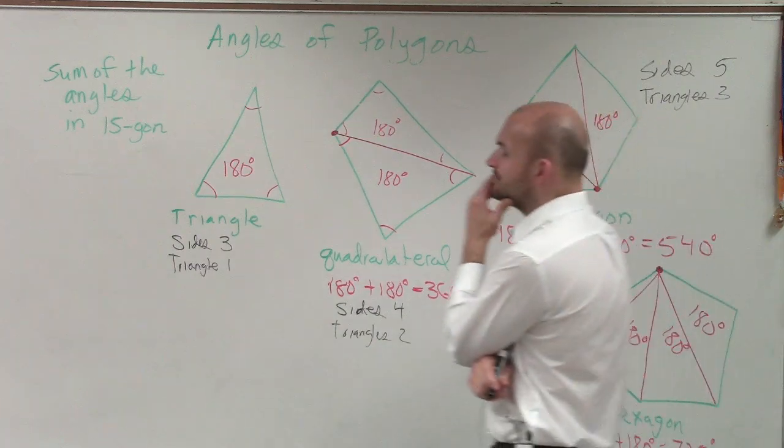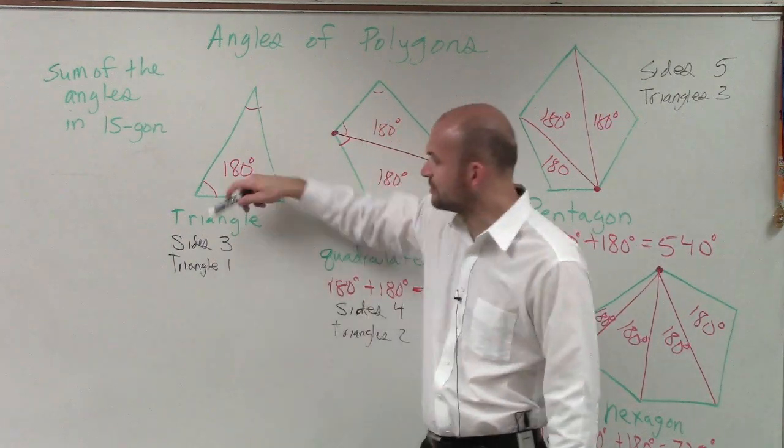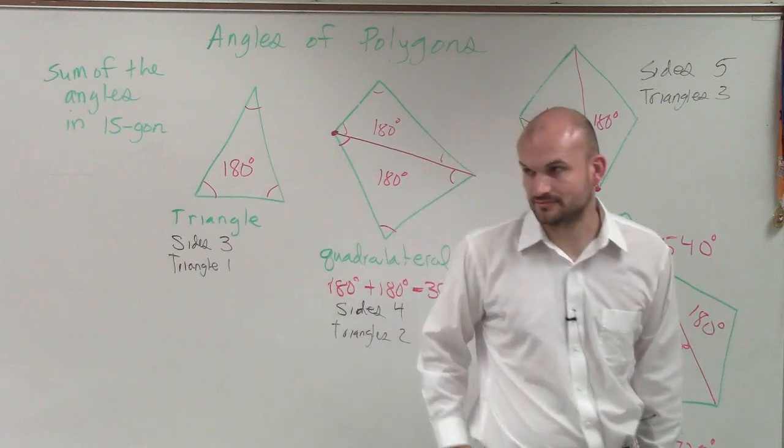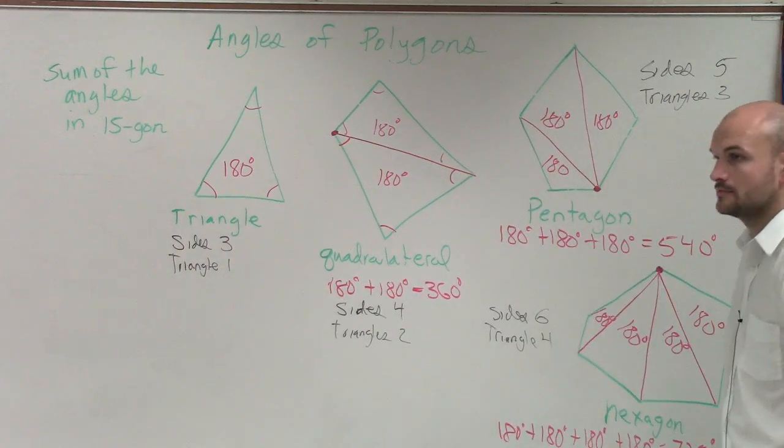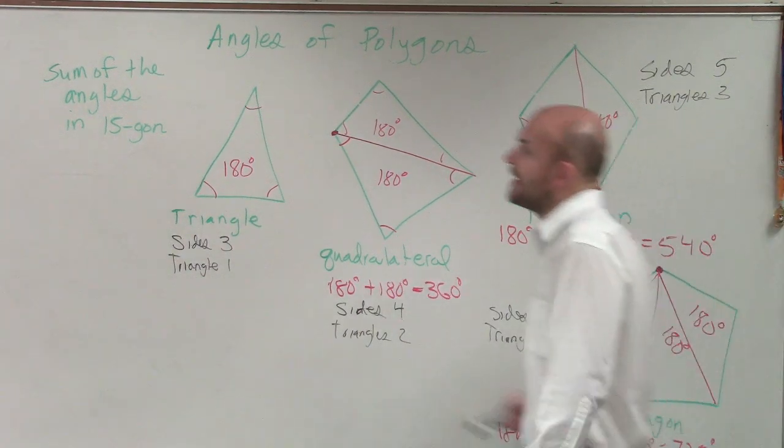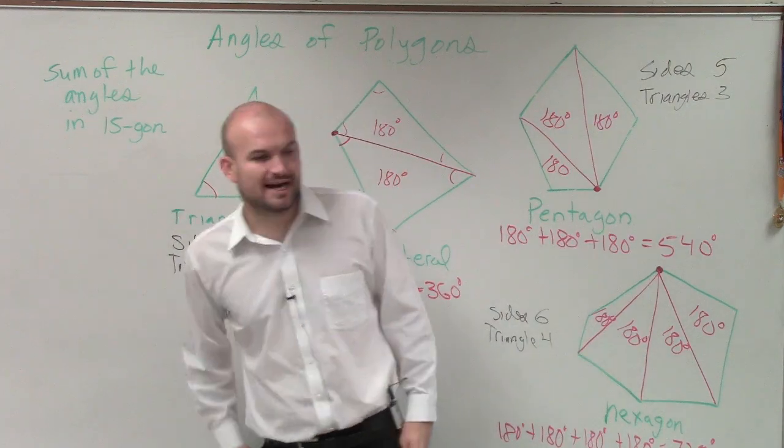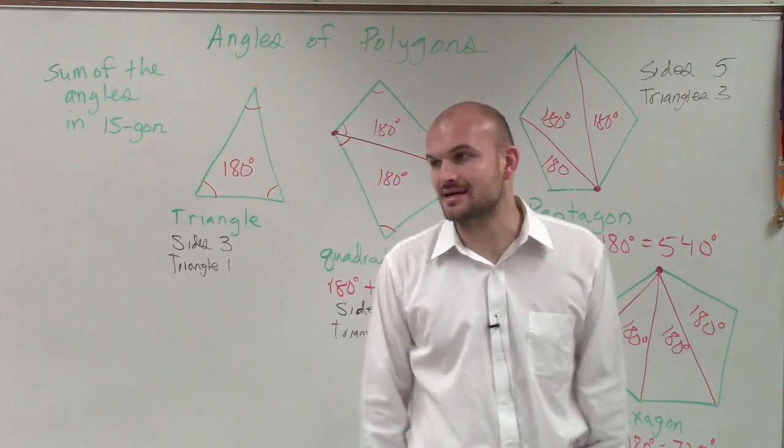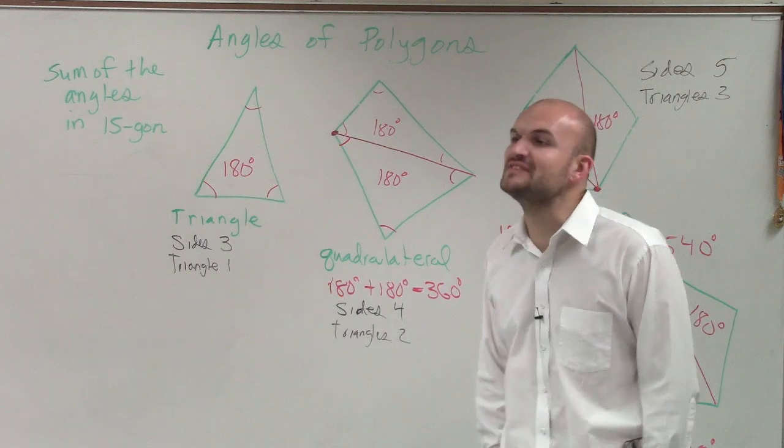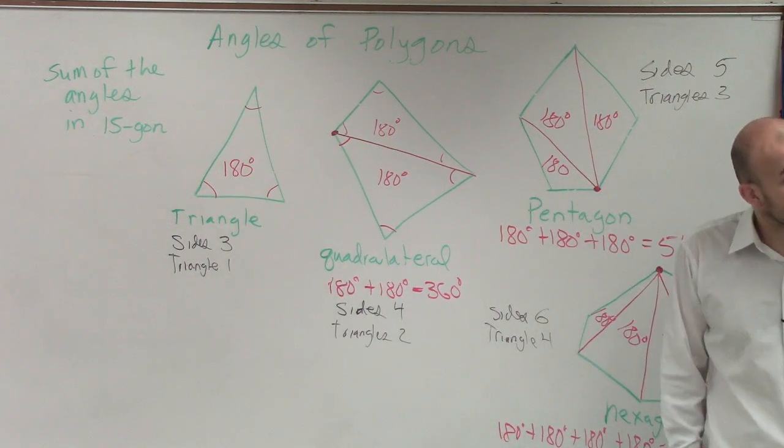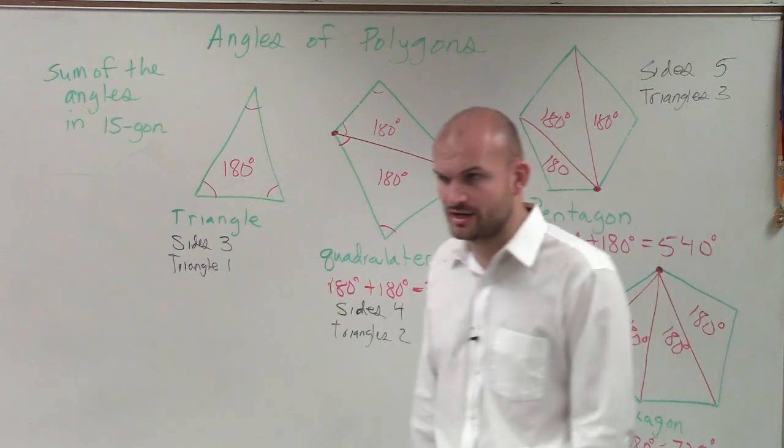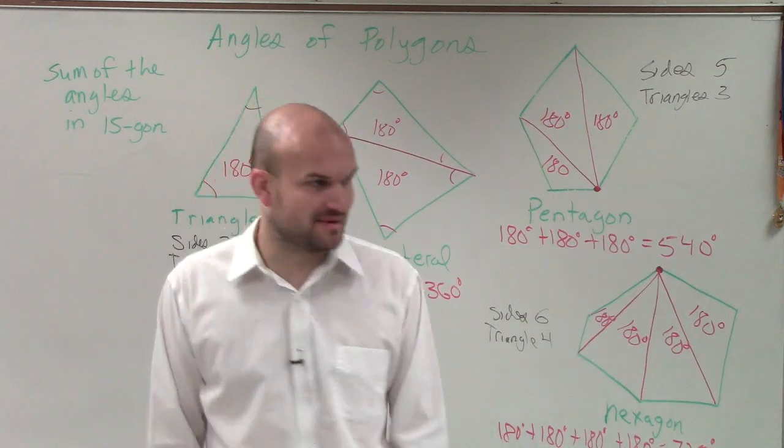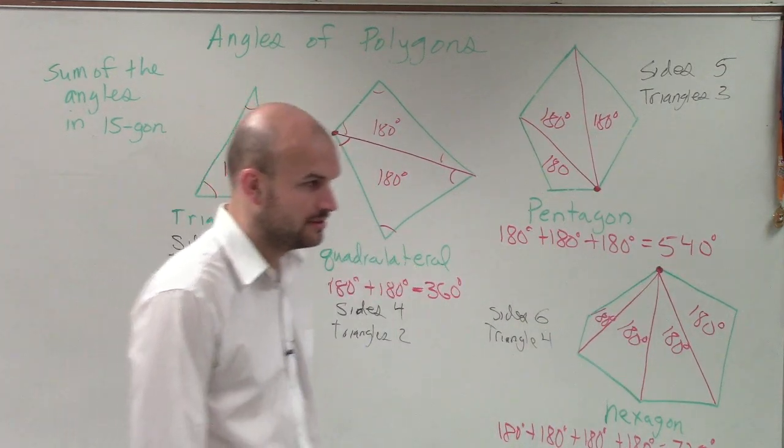Very good. Do you see a relationship between the number of sides and the number of triangles? There's a difference of two. So if I asked you a 15-gon, how many triangles do you think there is in a 15-gon? 13. Does that make sense? Would everybody agree that 13 would be a reasonable estimation of how many triangles there would be? Yes.